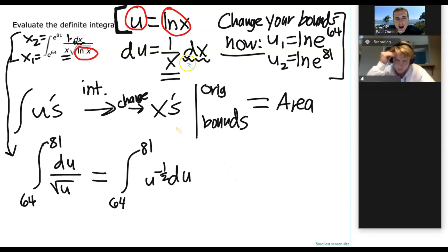So 64 to 81, u to the negative 1 half du. Now that looks like I can do that. That's not too bad. Now one more thing. Did you notice, by the way, in this case, we didn't have any stragglers? We didn't have any constants that we need to throw out front. So that's the way it worked out. It was just convenient.